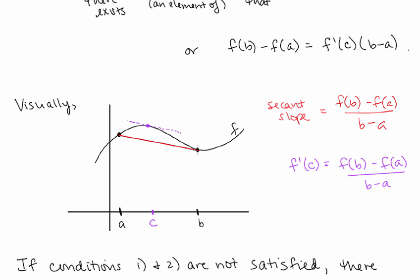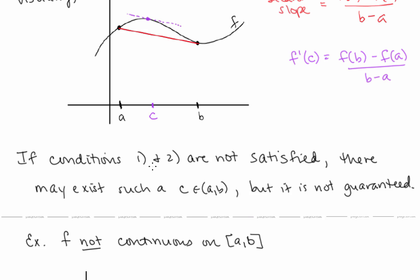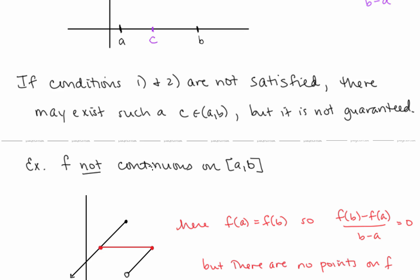In just a few minutes, we're going to use the Mean Value Theorem to show existence of these points and also solve for a few of them. But first let's take a look at what could happen if conditions 1 and 2 are not satisfied. If the conditions are not satisfied, there may exist such a c, but it's not guaranteed.